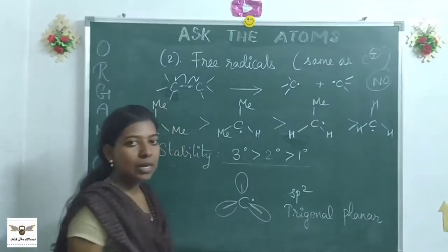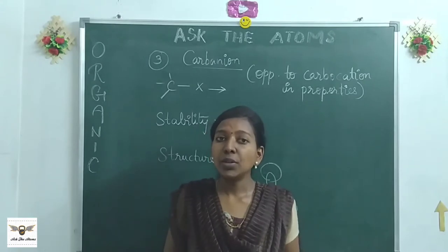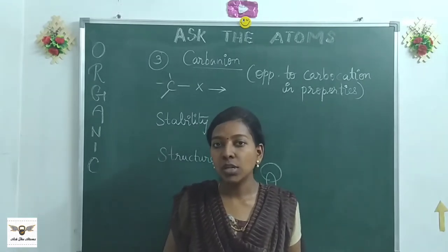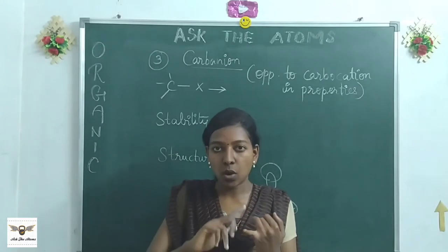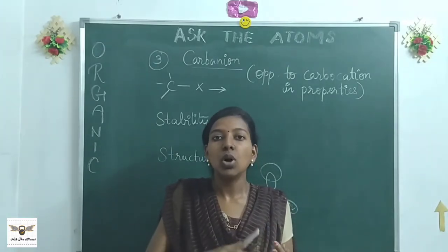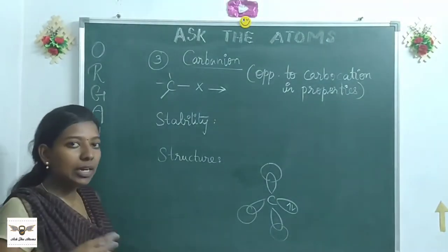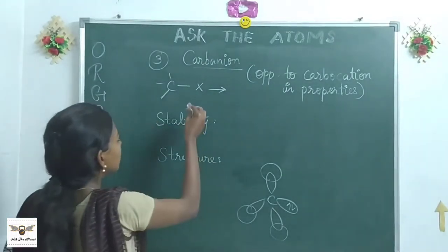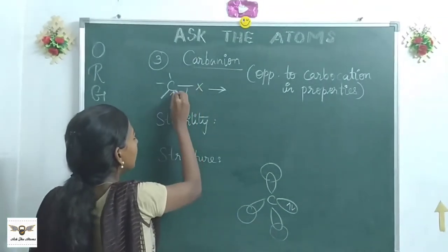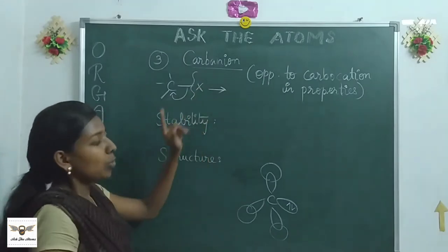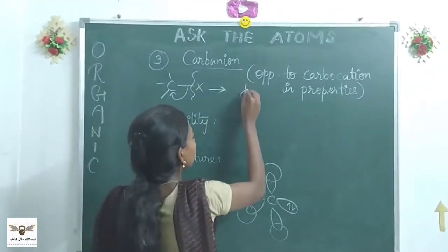Next are carbanions — quite opposite to carbocations. Once you master carbocations, understanding carbanions is straightforward. Carbanions carry a negative charge and are produced from heterolytic fission. To get a negative charge on carbon, the bond breaks towards carbon, meaning the other atom must be electropositive. So whenever carbon is attached to an electropositive element, a carbanion is formed.